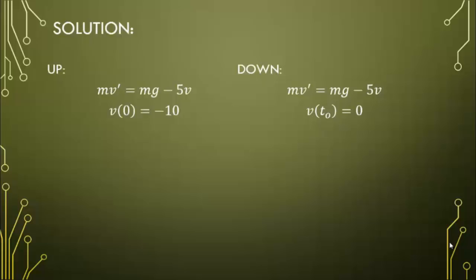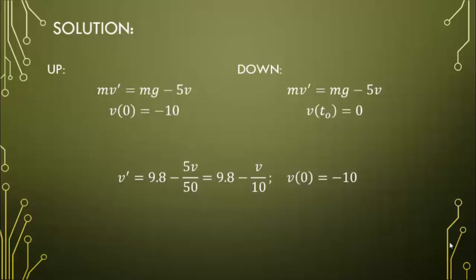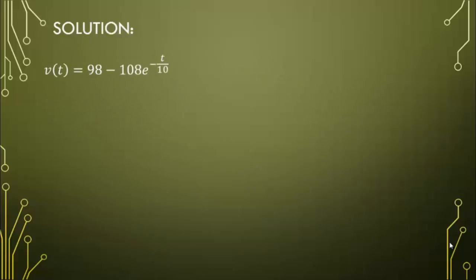Since the differential equations for both situations are identical, we can let the first equation govern the whole process. Plugging in mass = 50 kg and g = 9.8 m/s², and dividing out the mass, we get v' = 9.8 − 5v/50 = 9.8 − v/10, with v(0) = −10. This is a simple linear differential equation. Upon solving, we arrive at v(t) = 98 − 108 e^(−t/10).